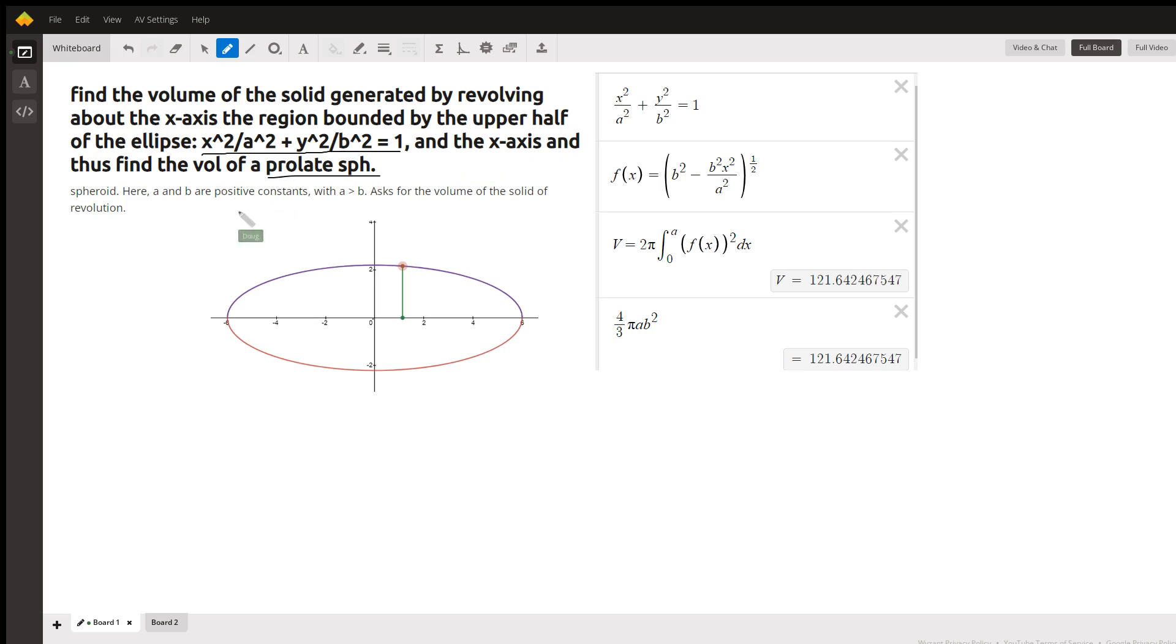Now there's the equation of the ellipse. For the upper half, we want to solve for y and give the positive square root. That's the height of this little typical rectangle right there.